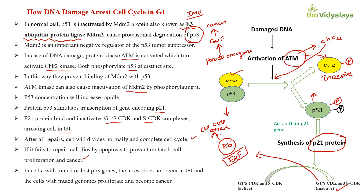In case P53 is mutated or there is no P53 in the cell, cell cycle arrest will not occur and cells with a mutated genome will proliferate and then become cancer. In cells with mutated or lost P53 gene, the arrest does not occur at G1, and the cells with mutated genome proliferate and become cancer.